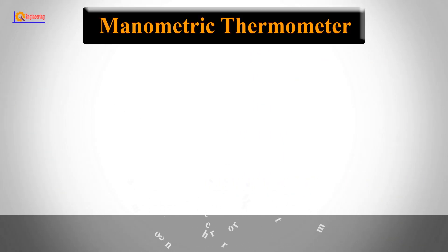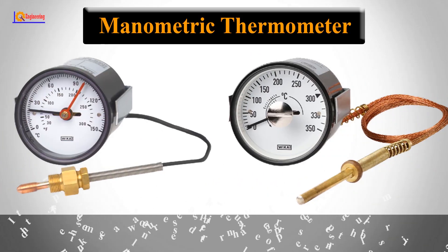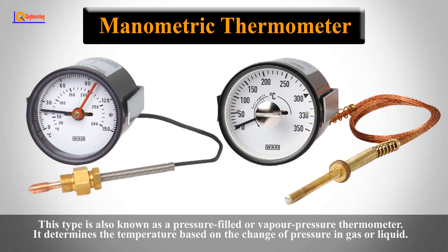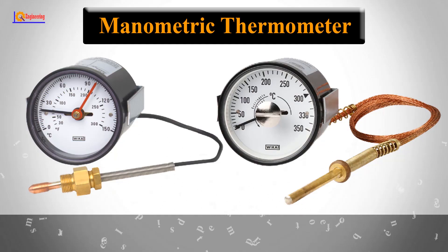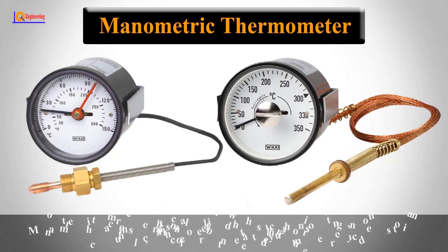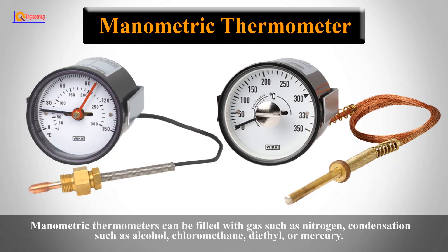Manometric thermometer. This type is also known as a pressure-filled or vapor pressure thermometer. It determines the temperature based on the change of pressure in gas or liquid. Manometric thermometers can be filled with gas such as nitrogen, condensation such as alcohol, chloromethane, or mercury.